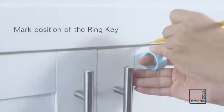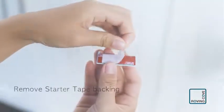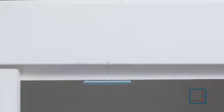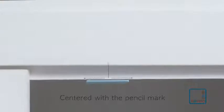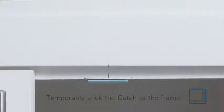Mark the position of the ring key. Remove the catch's starter tape backing and align the catch flush to the frame edge centered with the pencil mark. Temporarily stick the catch to the frame.